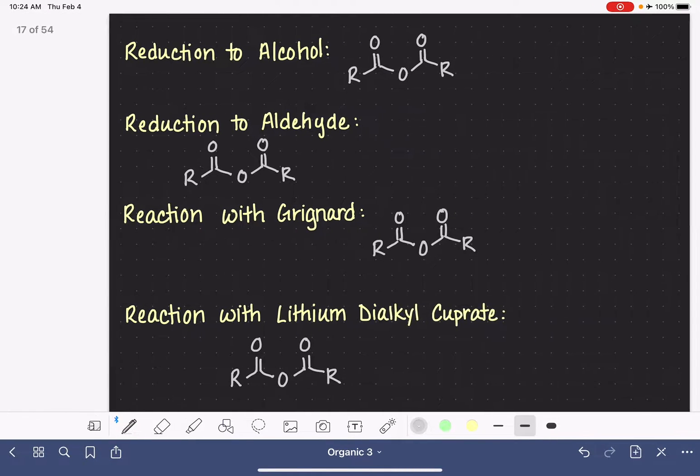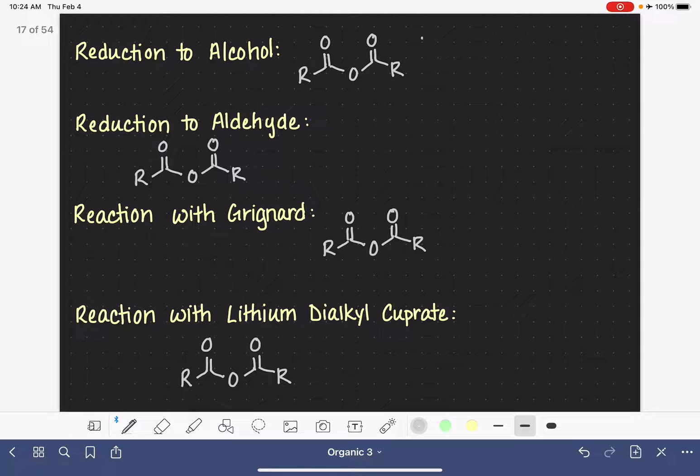For the next reaction, reduction to an alcohol, this is going to use our strong reducing agent, lithium aluminum hydride, followed by water or H3O+. This will synthesize a primary alcohol. The carbon of the carbonyl group is this carbon right here in our product.